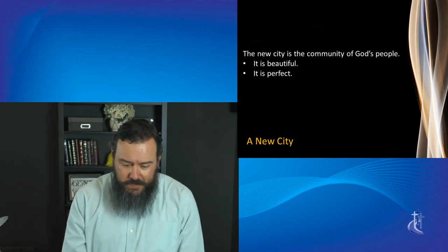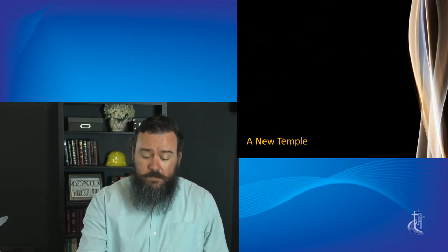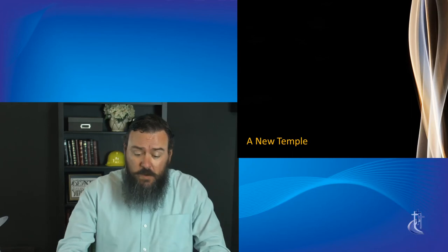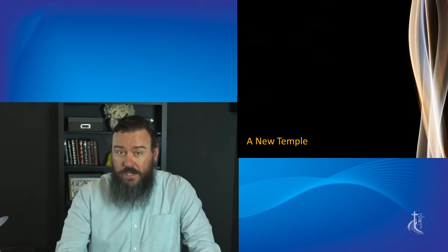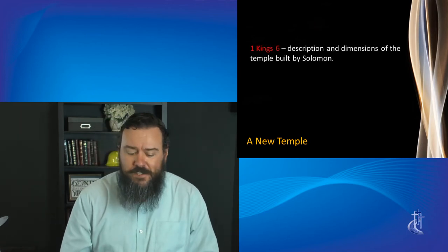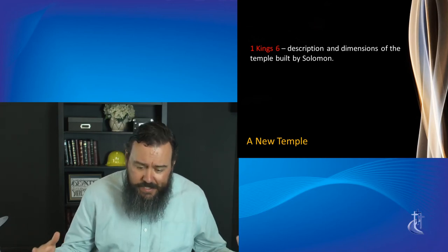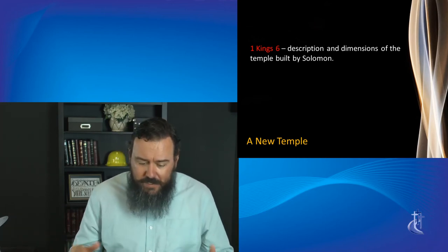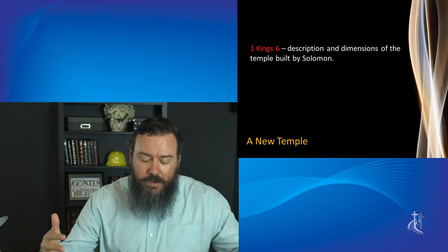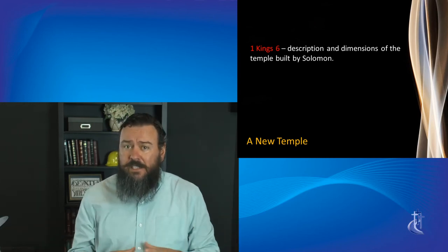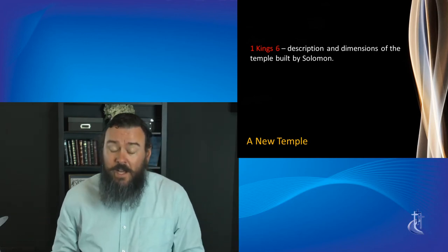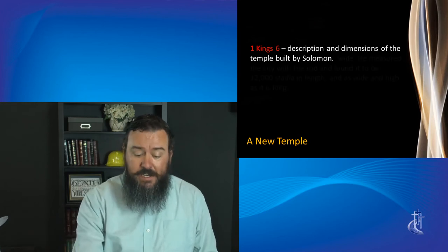But lastly, eternity is described as a new temple. Now, I know this might seem a little strange if you were paying attention. Earlier when I read Revelation 21, verse 22, John said he did not see a temple because the Lord God and the Lamb are the temple. But consider this. In 1 Kings 6, if you go there and read that, you can see the description and the dimensions of the temple built by Solomon. It's a fairly detailed description of Solomon's temple.